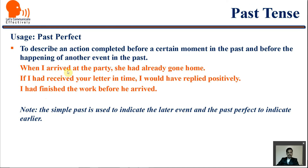'When I arrived' — simple past — indicates the later action or later event, because 'she had already left' — past perfect — happened first. She had left the place before I arrived. That's why 'I arrived' is simple past and 'she had already left' is past perfect. The first event uses past perfect; the latter event uses simple past — the same applies to all three example sentences.